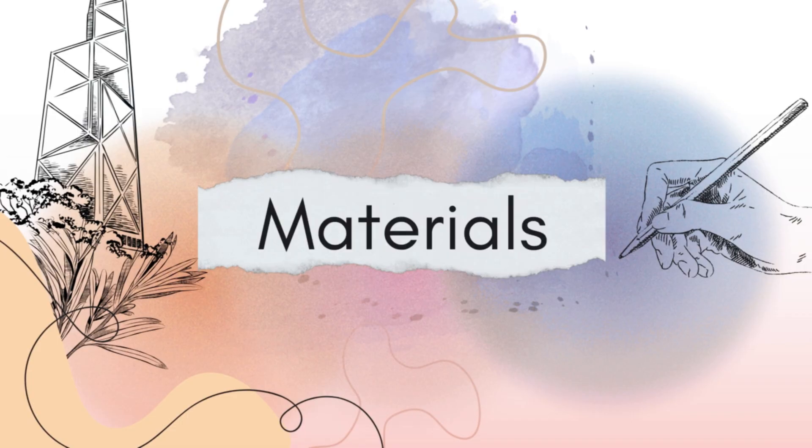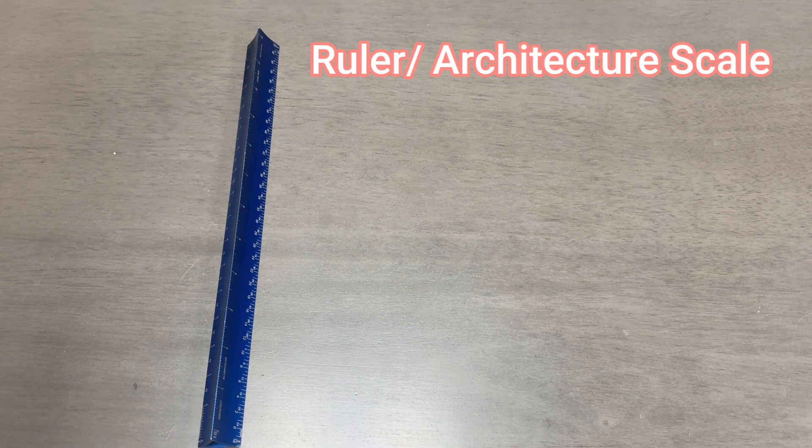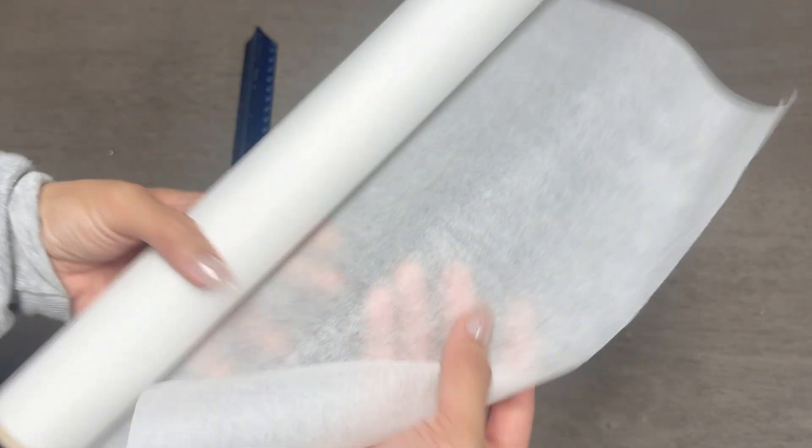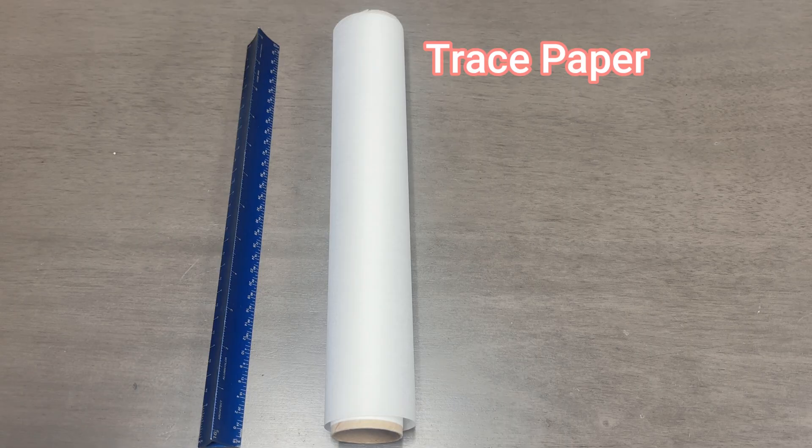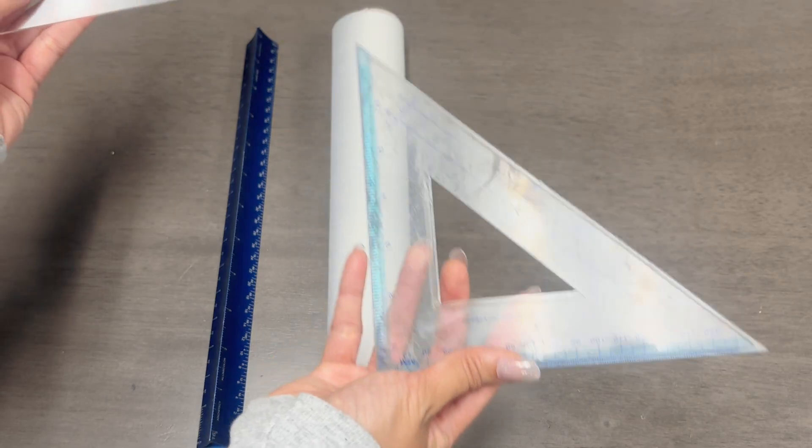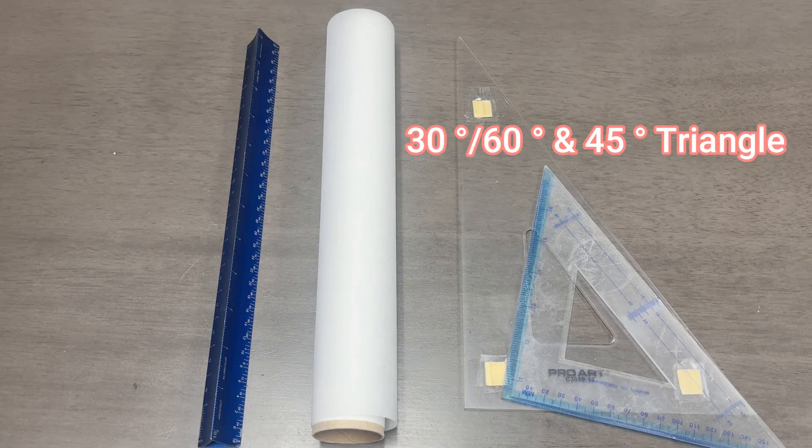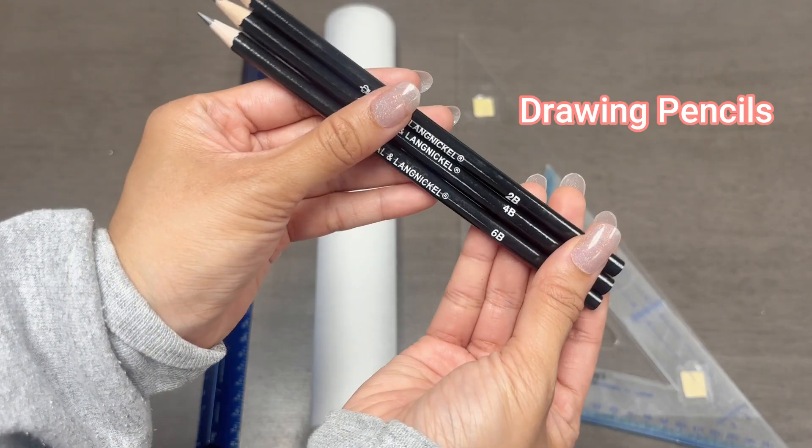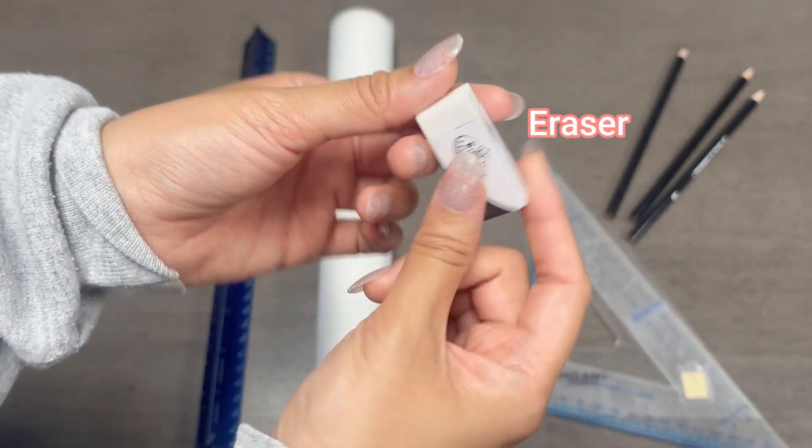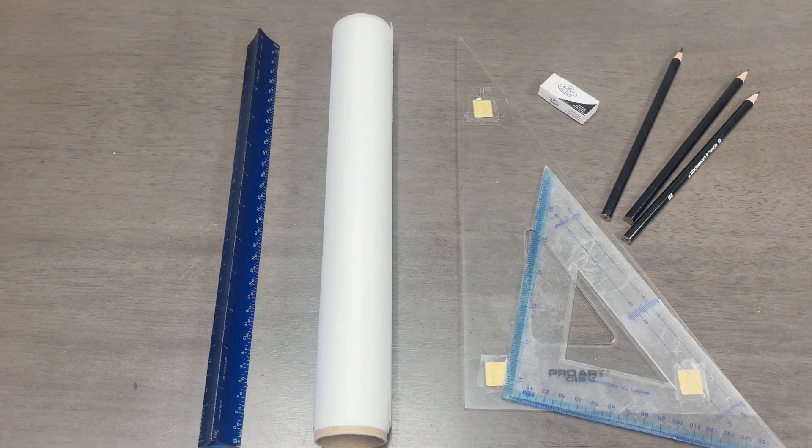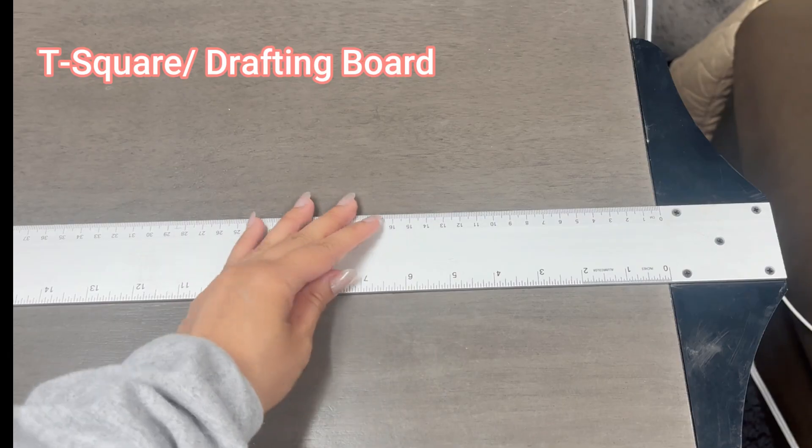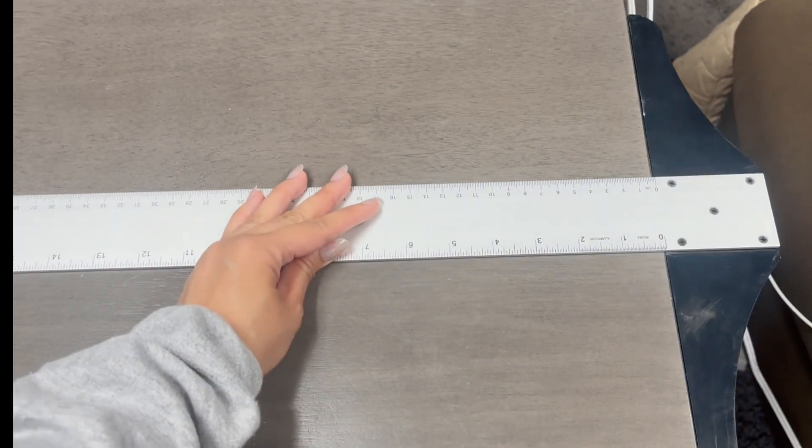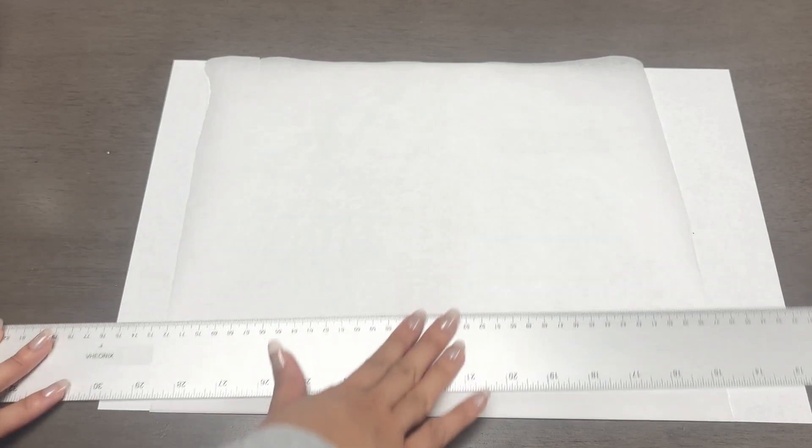Materials: You'll need a ruler. I'm using an architectural scale, especially for practice too. Paper of your choice. I'm using trace paper. A 30-60 degree triangle and a 45 degree triangle. Drawing pencils. I'm using B pencils because they're softer and give a bolder line weight. An eraser and of course your T-square or drafting board. Make sure that your desk has a straight 90 degree edge if you're using a T-square.